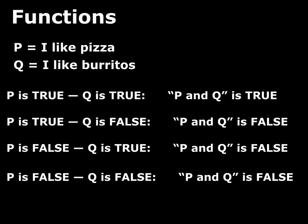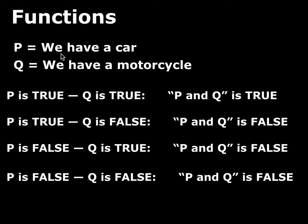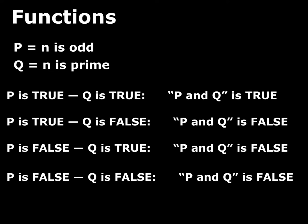What's interesting is that this specific pattern — this conjunction 'P and Q' — is true when both conjuncts are true, but it's false in any other case: I like pizza but not burritos; I like burritos but not pizza; I don't like either. That has nothing to do with the fact that the atomic statements are about pizza and burritos. If we change the atomic statements to 'we have a car and we have a motorcycle,' you get exactly the same pattern.